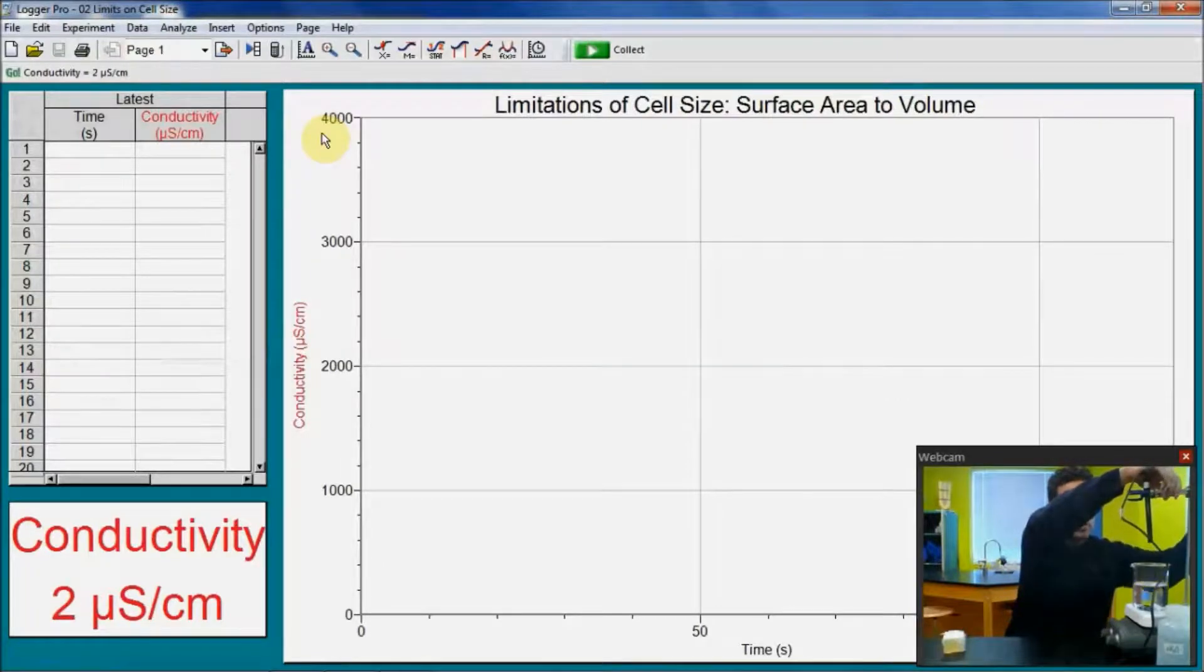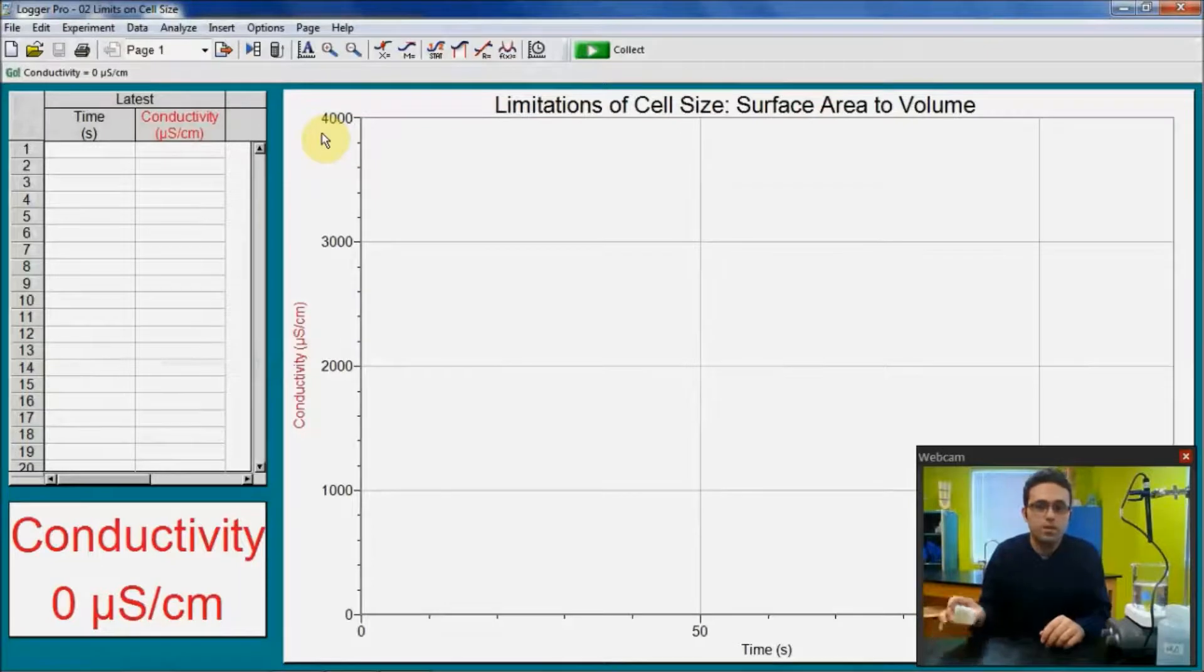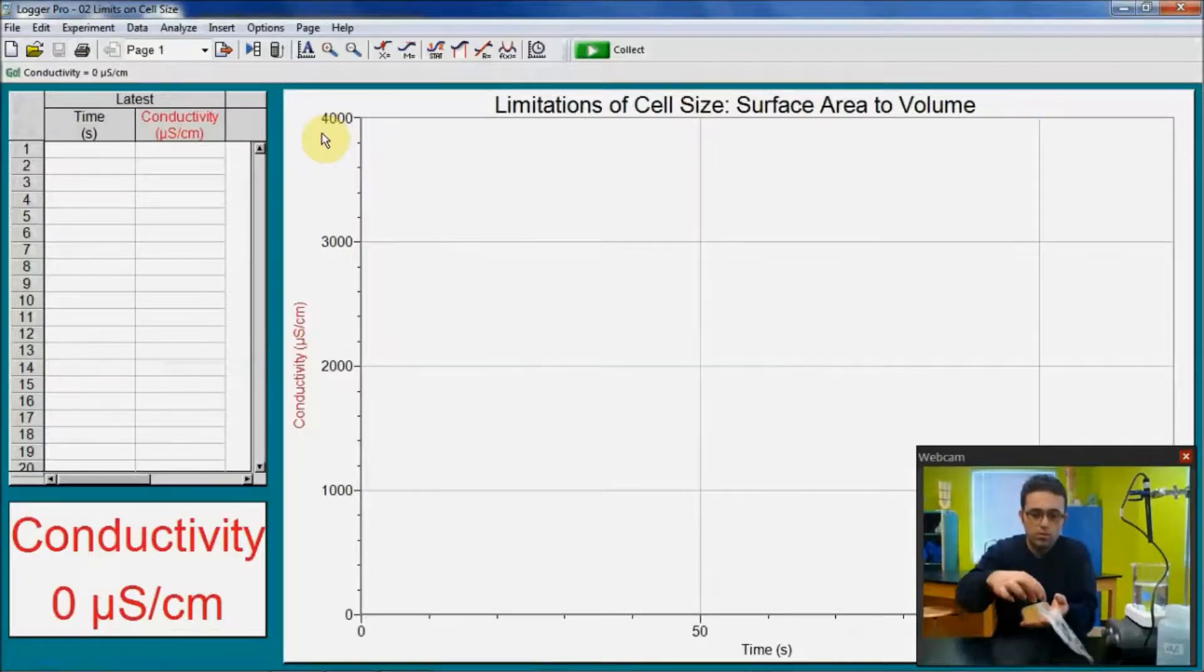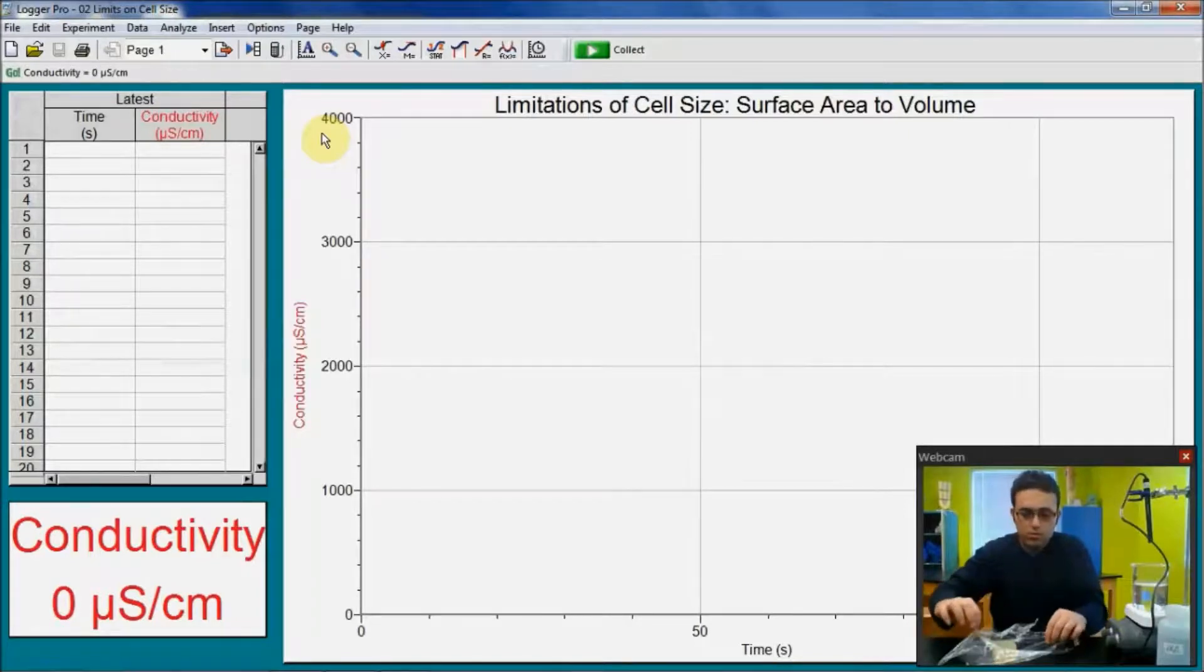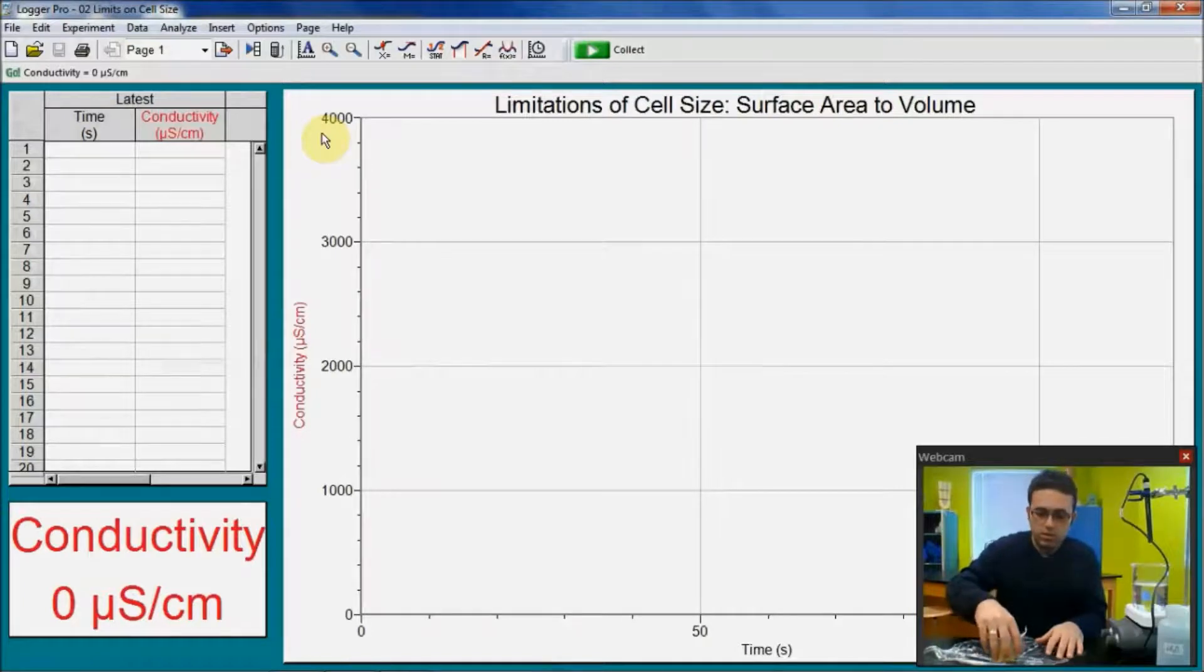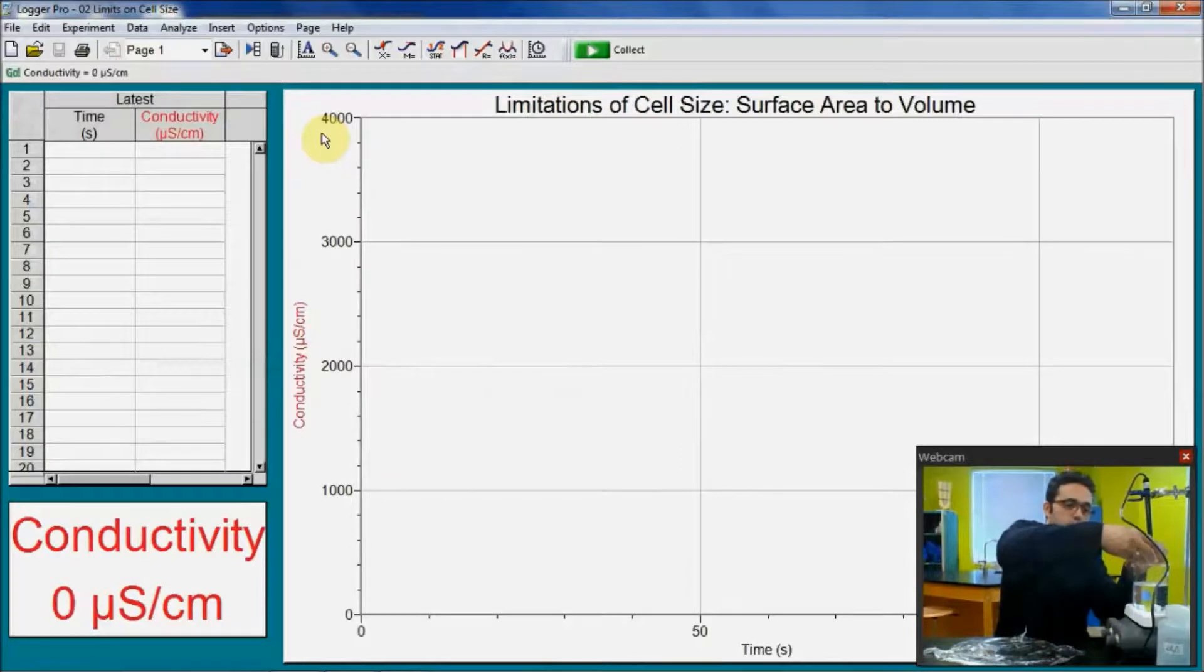Now, before I start my experiment, I will place my model cell, which is this agar cube, into the distilled water. I wrapped it in these plastic wraps so it won't lose water through evaporation and won't change its concentration. I prepared them beforehand and I store them in these plastic wraps until we start the experiment. In another video, I will try to show you how you could prepare these agar cubes. So I will place this in the water, distilled water, and then I submerge my conductivity probe into the distilled water and then start data collection.